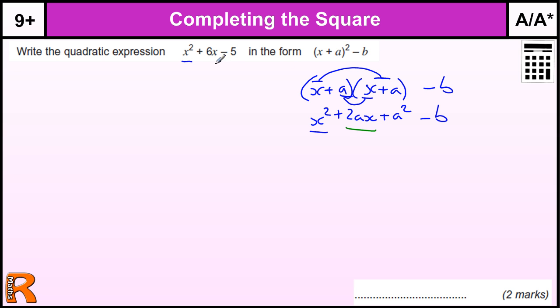The 2Ax must be the same as plus 6x. So that tells us that 2A must equal 6, which implies A equals 3.